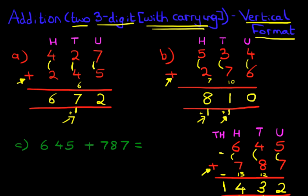So adding two three-digit numbers with carrying in the vertical format is very straightforward. Have a practice with a few numbers and you'll soon get the hang of it.